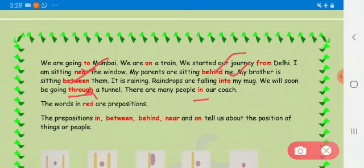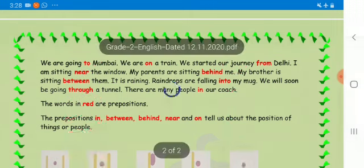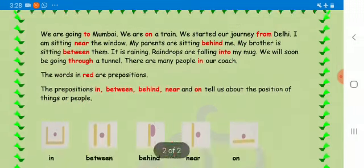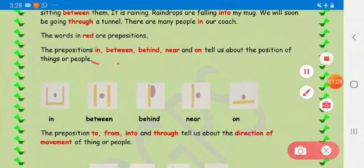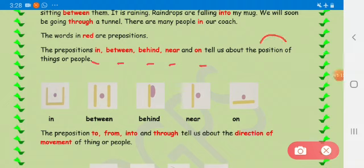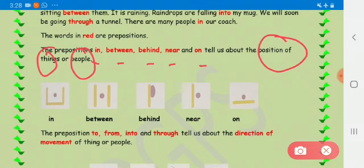The words in red are prepositions. Now let's read some more prepositions and categorize them. The preposition in, between, behind, near and on are telling us about the position of a thing or a place. They are telling us about the position, where the thing or the person is.